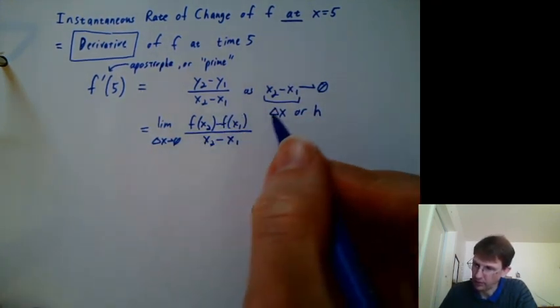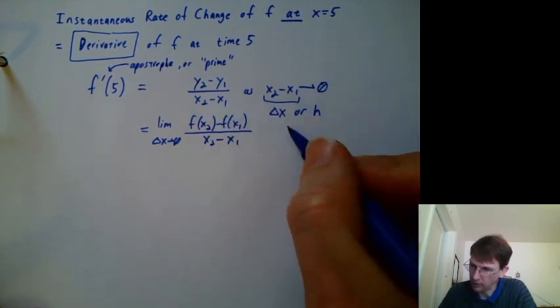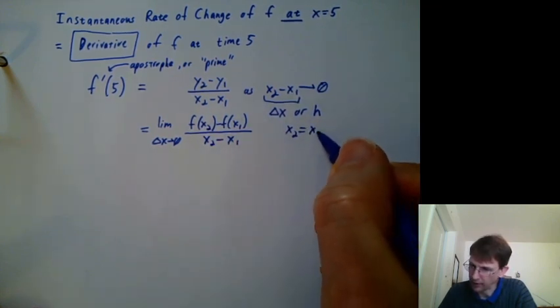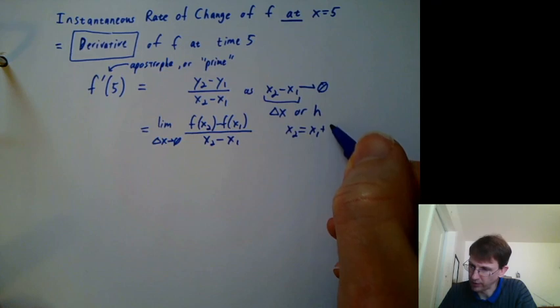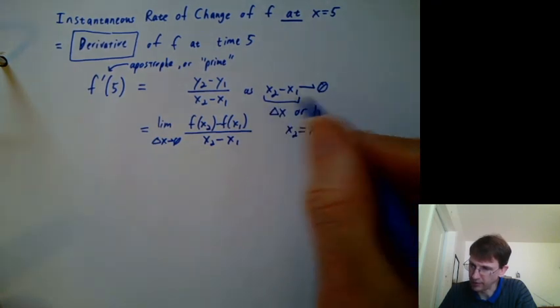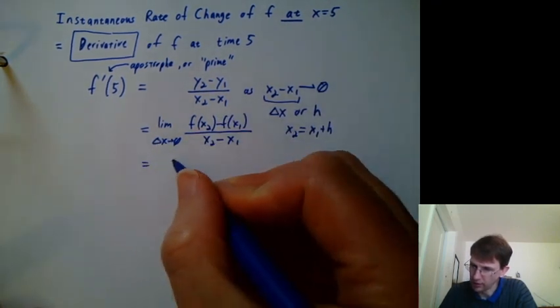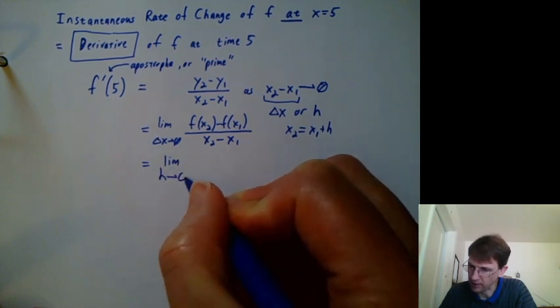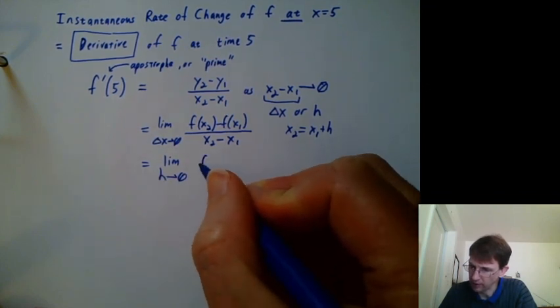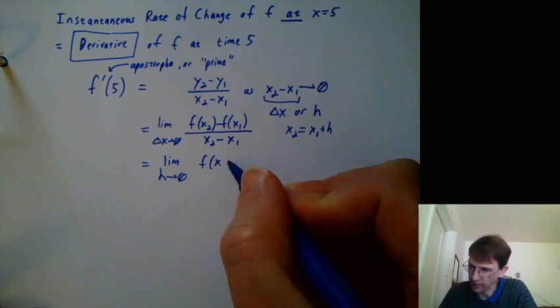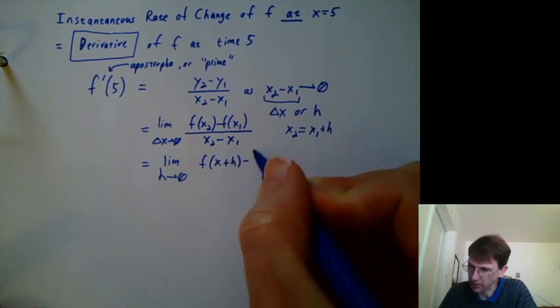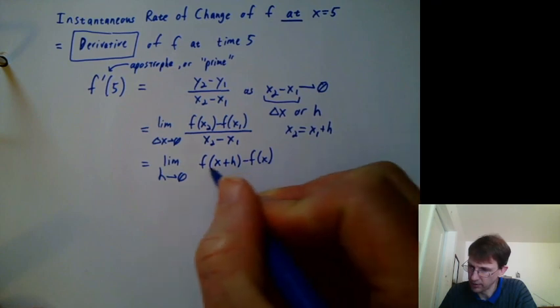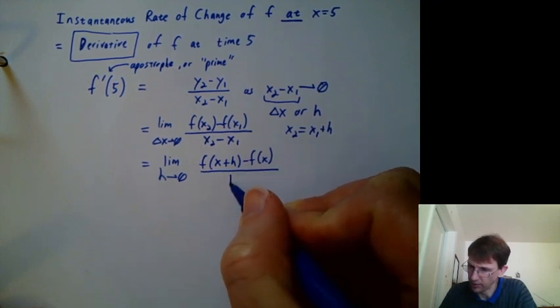And then we can rewrite x2 as x1 plus h, because h is the difference between the two. So altogether, we can write this as the limit as h goes to 0 of f of x plus h minus f of x over h.